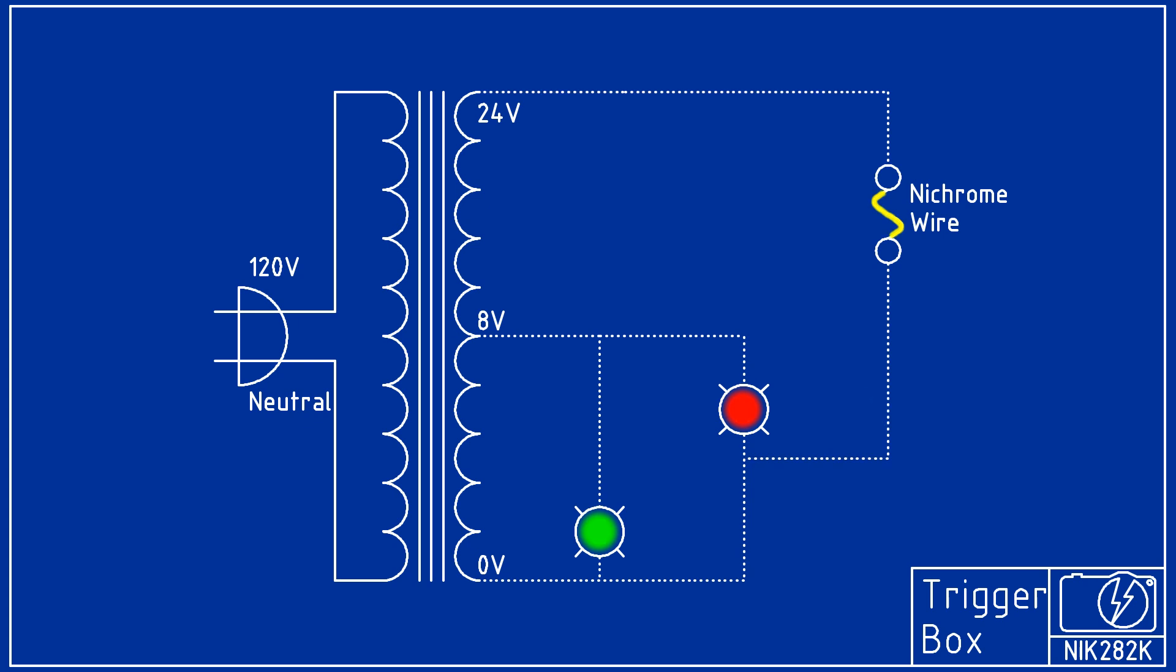Pressing the illuminated red button allows power to flow from the 24-volt terminal on the doorbell transformer, through the nichrome wire at the end of the alligator clips, and through the switch in the red push button. This causes the nichrome wire to be heated, firing the device.